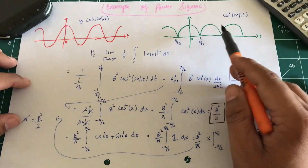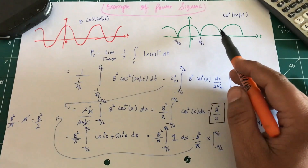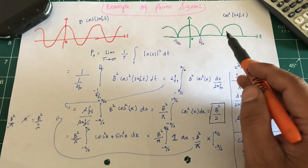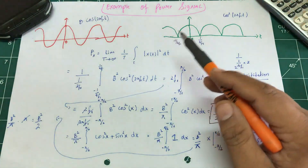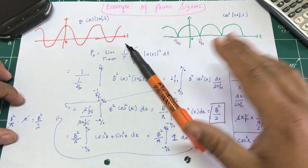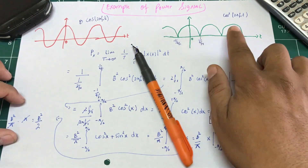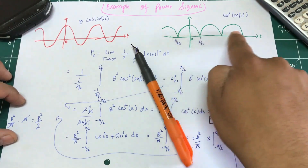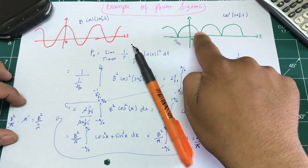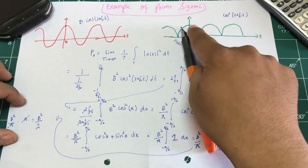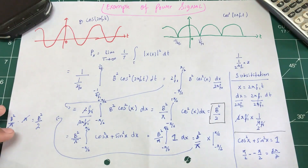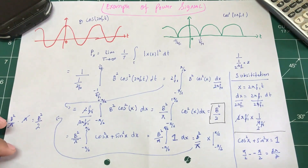This result is finite, confirming the cosine signal is indeed a power signal. One application: when designing an envelope detector for a double-sideband large-carrier amplitude modulated signal, passing the signal through a diode converts it to a full-wave rectified signal, and proper filtering recovers the original signal. I hope you liked this tutorial — please leave questions in the comments and don't forget to subscribe.